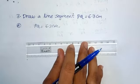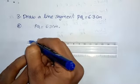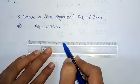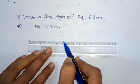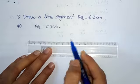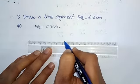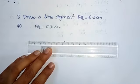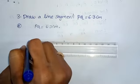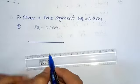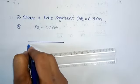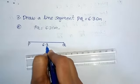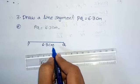First locate the 0 position. We are starting from 0 to 6.3 cm. After 6, one small division is 6.1, then 6.2, then 6.3 — locate exactly at 6.3. This point represents 6.3. Now join these two points. This length is 6.3 cm. The initial point is P and the end point is Q, so PQ is a line segment of 6.3 cm.